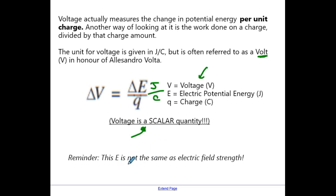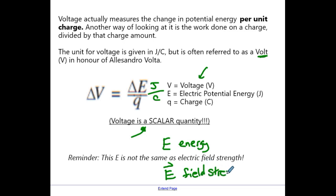One of the more confusing things in physics is that if you ever see E written without a vector arrow, this refers to energy, but if you see E written with a vector arrow, it now means field strength. It's unfortunate that when they were picking letters to represent different concepts — we have 26 letters in the alphabet and even use Greek letters — they needed to double up. Energy is sometimes capital E without a vector, and field strength is capital E with a vector. Also, little e is an elementary charge. Make sure you're very careful knowing what is what when you're using formulas.